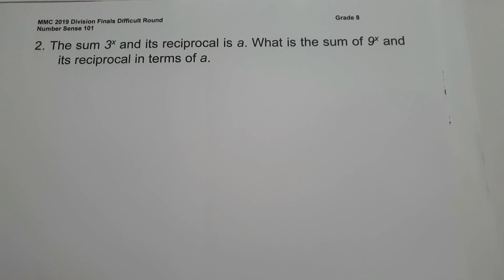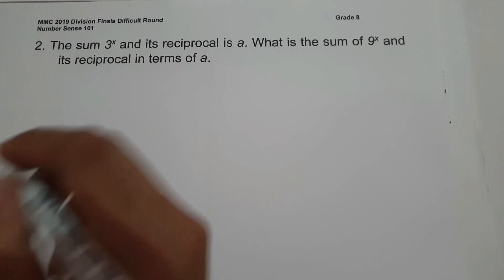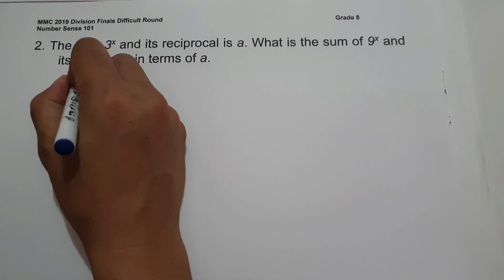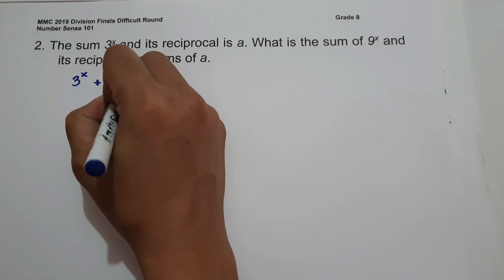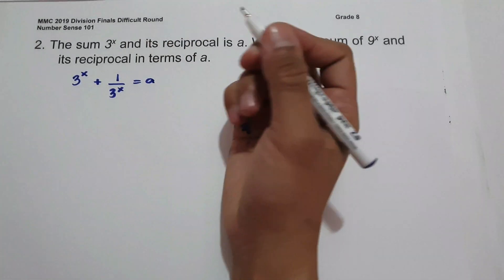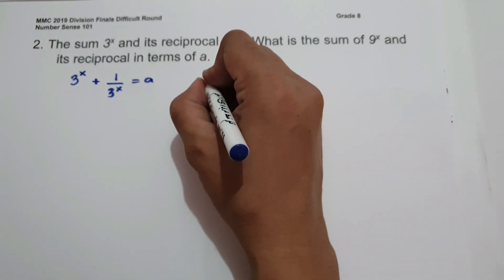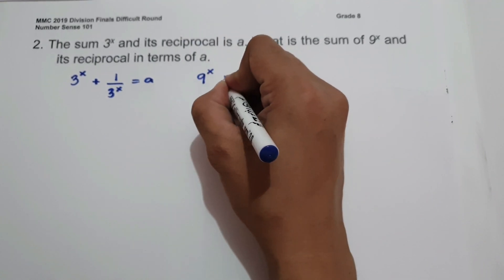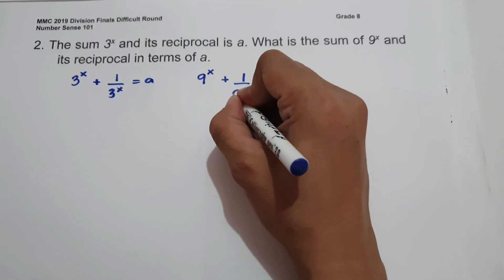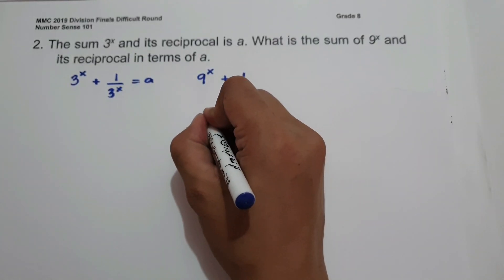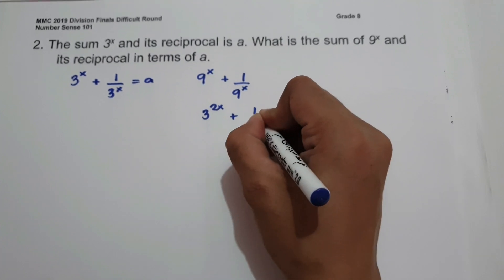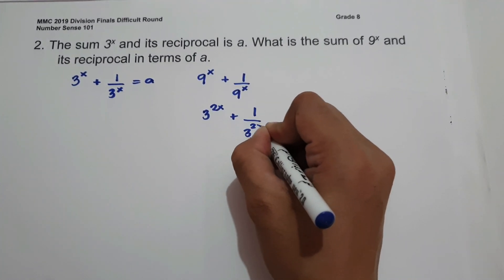On number 2, the sum of 3 raised to X and its reciprocal is A. What is the sum of 9 raised to X and its reciprocal in terms of A? We have 9 raised to X plus its reciprocal, that is 1 over 9 raised to X, which can be written as 3 raised to 2X plus 1 over 3 raised to 2X.